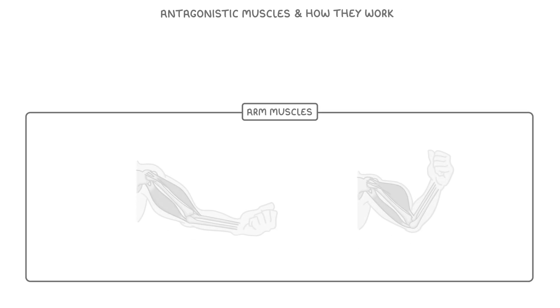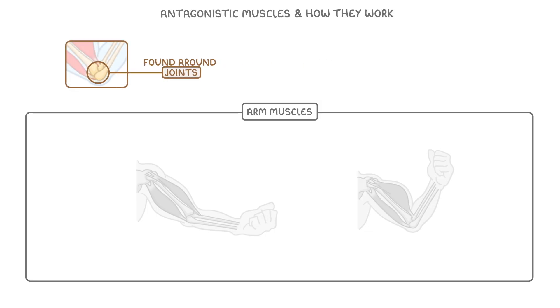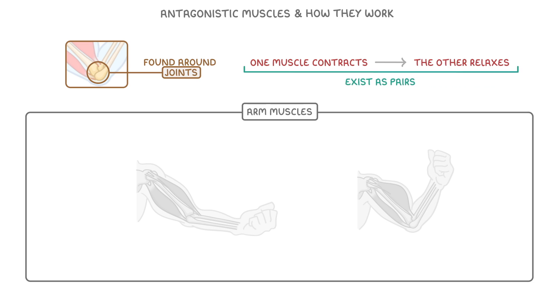Now let's take a look at antagonistic muscles and how they work, and let's use the arm muscles again as our example. Antagonistic muscles are usually found around joints, and a key thing to remember about them is that when one muscle contracts, the other muscle relaxes. This means that antagonistic muscles exist as pairs of muscles.